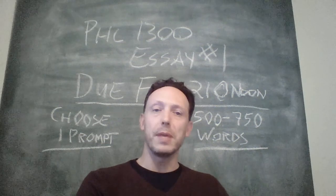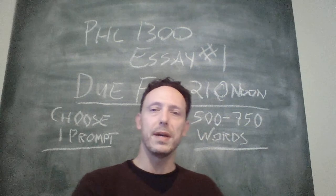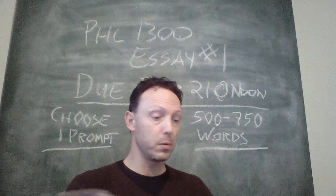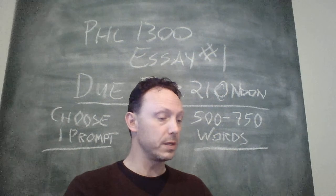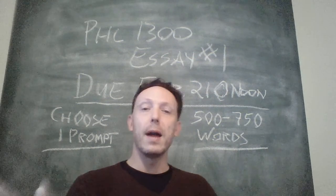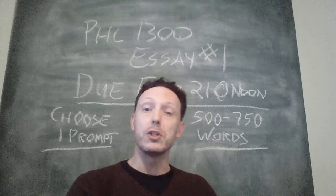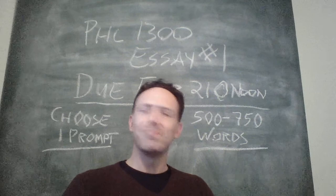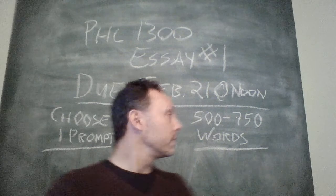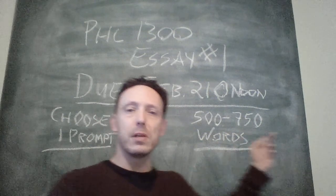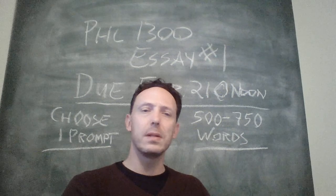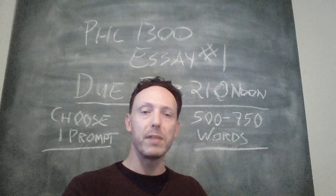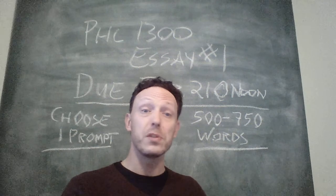You'll see on the assignment page I've taken a lot of boilerplate from the course syllabus. The idea that the course is divided into three sections, two theorists each, and you're going to write an essay for each one of those sections. These are not wildly long essays — they're 500 to 750 words, so basically if you're going New Times Roman 12 point font double spaced, that's two or three pages.